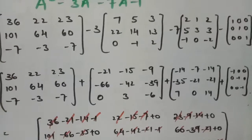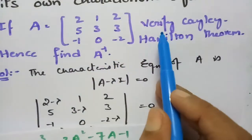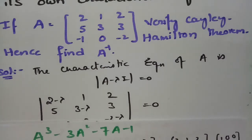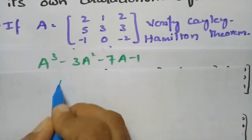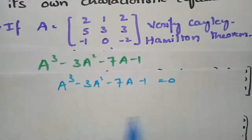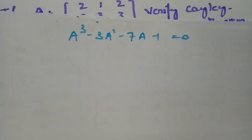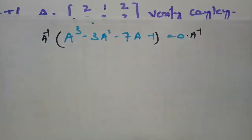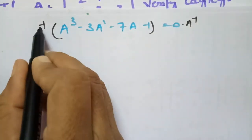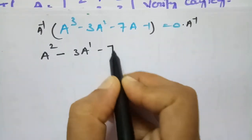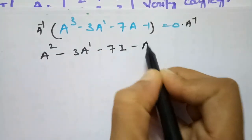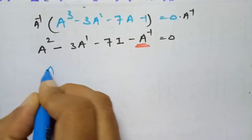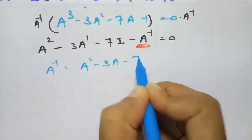Now we find A inverse. From the characteristic equation A³ minus 3A² minus 7A minus I equals 0, we multiply both sides by A inverse. This gives A² minus 3A minus 7I minus A inverse equals 0. Therefore, A inverse equals A² minus 3A minus 7I.